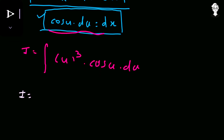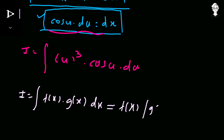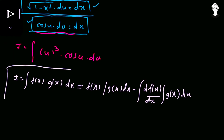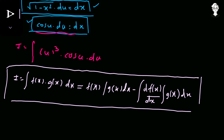We use the integration by parts formula: the integral of f(x)·g(x) dx equals f(x) times the integral of g(x) dx minus the integral of [f'(x) times the integral of g(x) dx] dx. We have two functions u³ and cos u. We take u³ as f(x) because its derivative decreases it to 3u², whereas integrating it would increase the power. So u³ is f(x) and cos u is g(x).